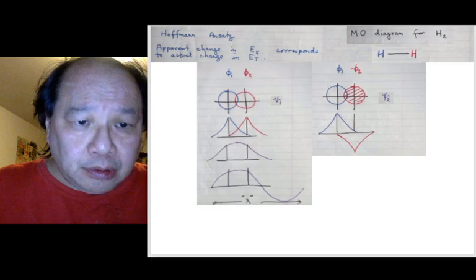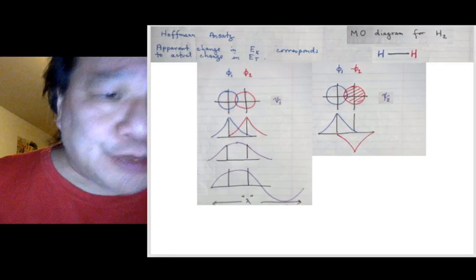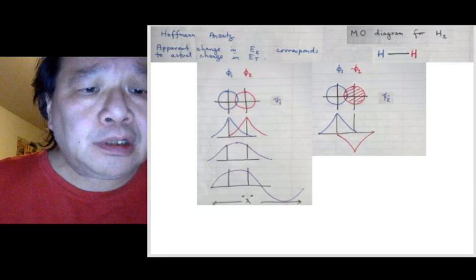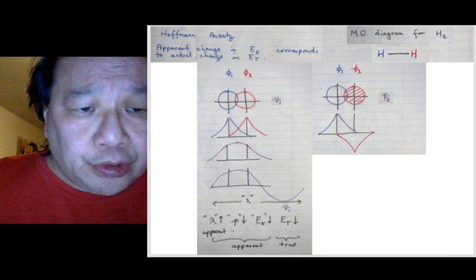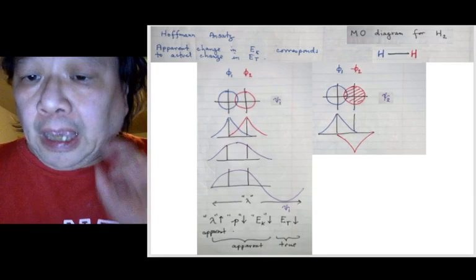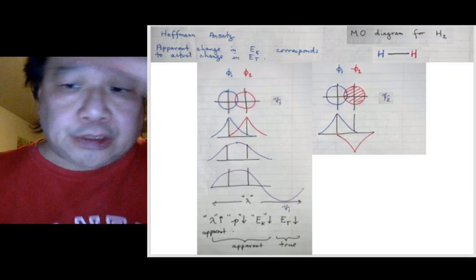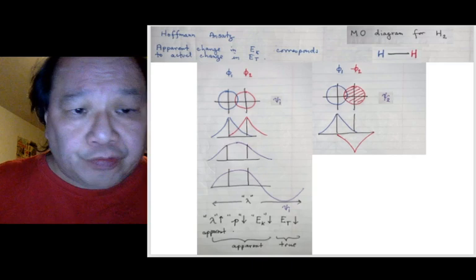And now, here comes the Hoffman Ansatz, which is in direct contradiction to the Virial Principle, which is in fact correct. The apparent decrease in kinetic energy corresponds to a real decrease in the total energy. This is the idea. And indeed, the constructive interference, which makes it look like lambda has increased, and therefore momentum has decreased, corresponds to a lowering of the total energy.